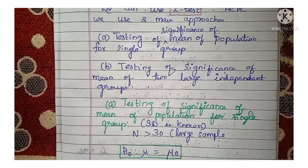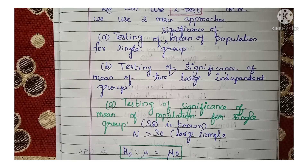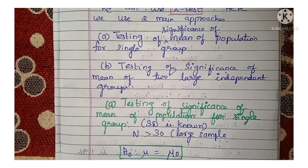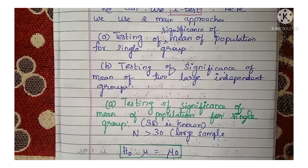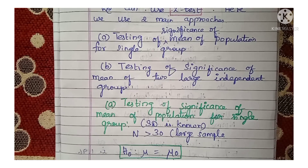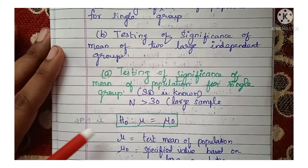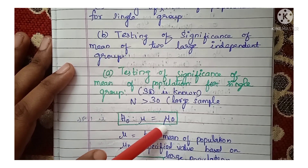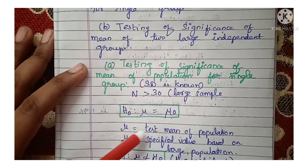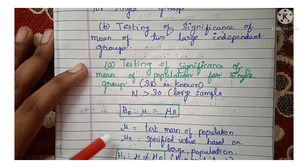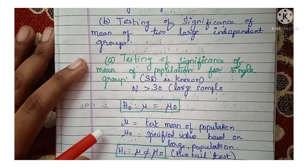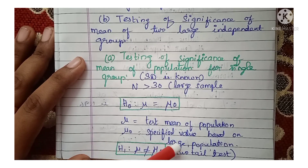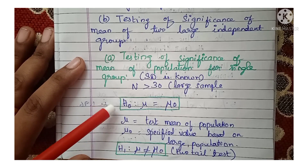The first approach is testing of significance of mean of population for only one group where the standard deviation is known. Since this is a Z-test applied for large samples, the sample size is more than 30. The first step is to formulate a null hypothesis and an alternate hypothesis. The null hypothesis H₀ is: mu is equal to mu-naught, where mu is the test mean of the population and mu-naught is the specified mean value based on the large population.